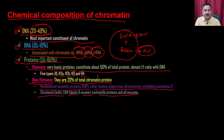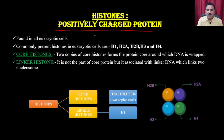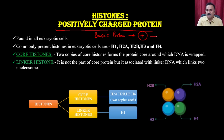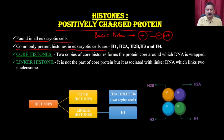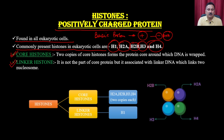Histone proteins are required for packaging. They are positively charged basic proteins, giving them instant attraction for the negatively charged DNA — negative because of the phosphate backbone. Histones are found in all eukaryotic cells: H1, H2A, H2B, H3, and H4. These five histones are categorized into two structural regions: core histones (H2A, H2B, H3, H4) and linker histone (H1).